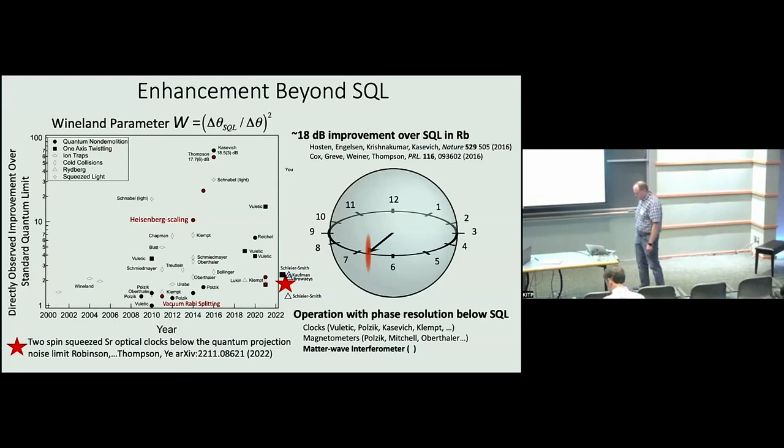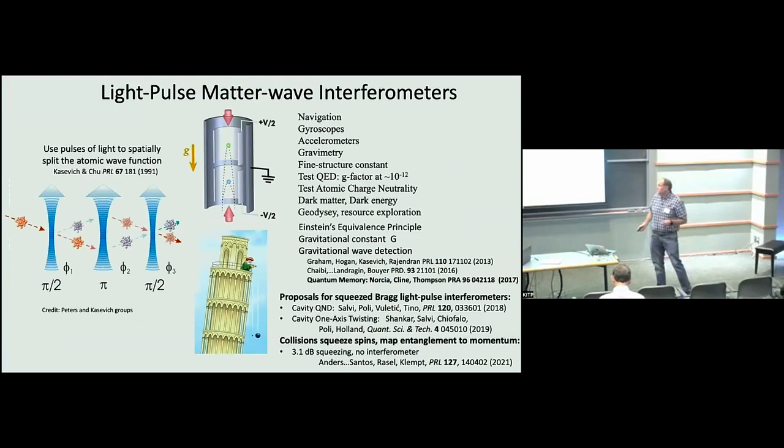That's missing, and we think it's important because light-pulse matter wave interferometers are very important for exploring all kinds of wonderful science, as discussed in the two previous talks by Tim and Syeda. The big picture is you use light pulses to put atoms in superpositions of two different momentum states, separate them, recombine them, and interfere them like an optical interferometer.